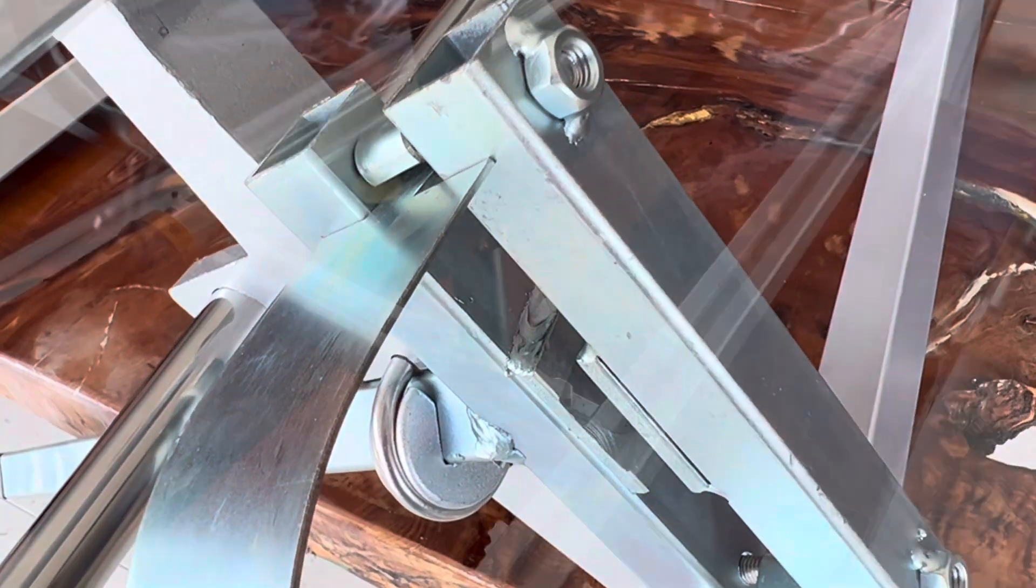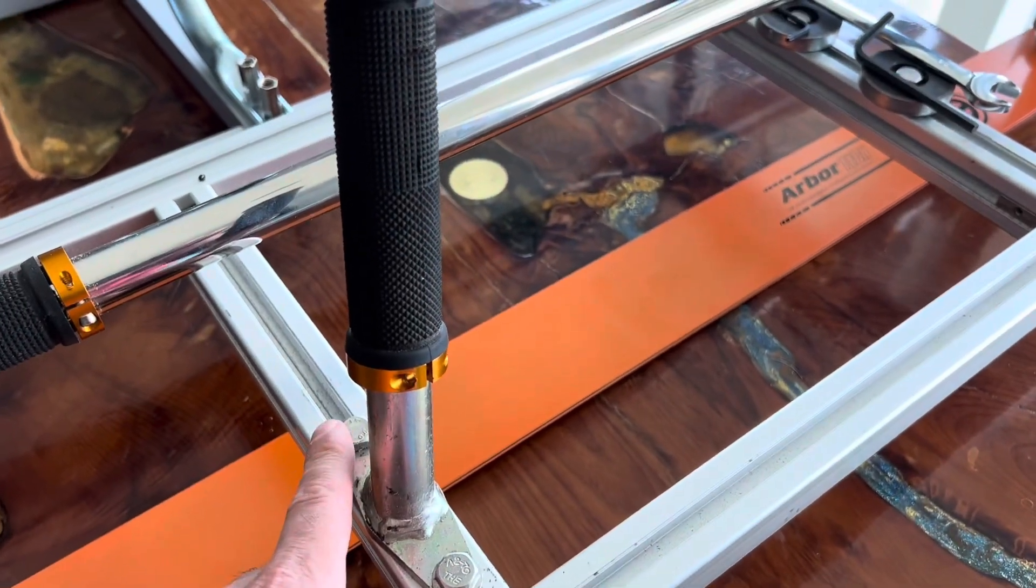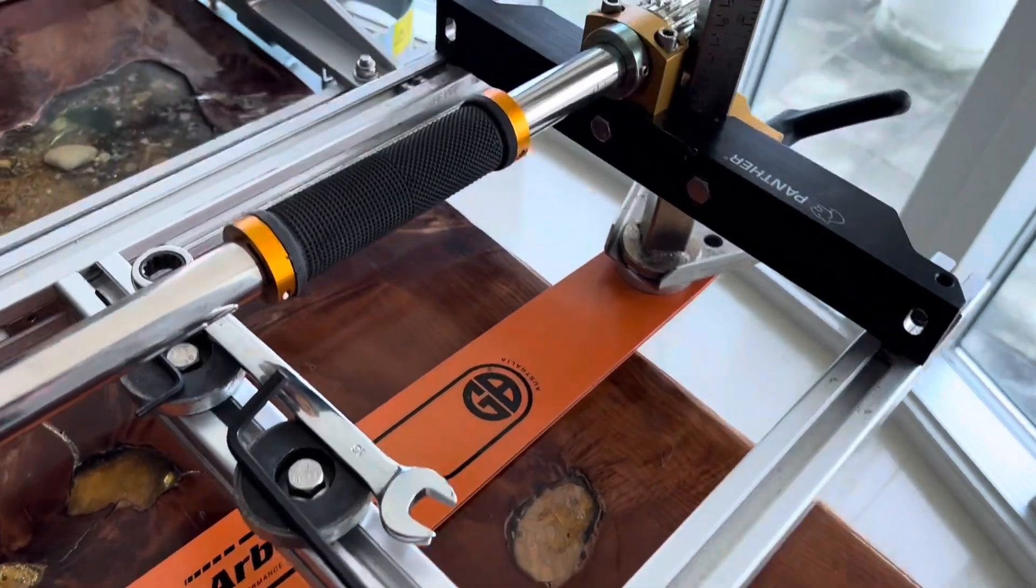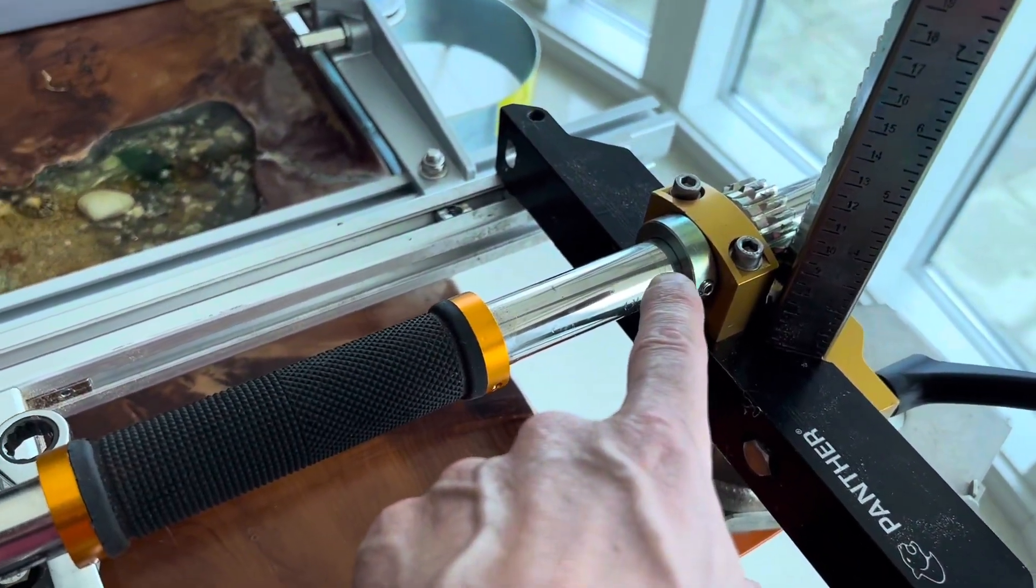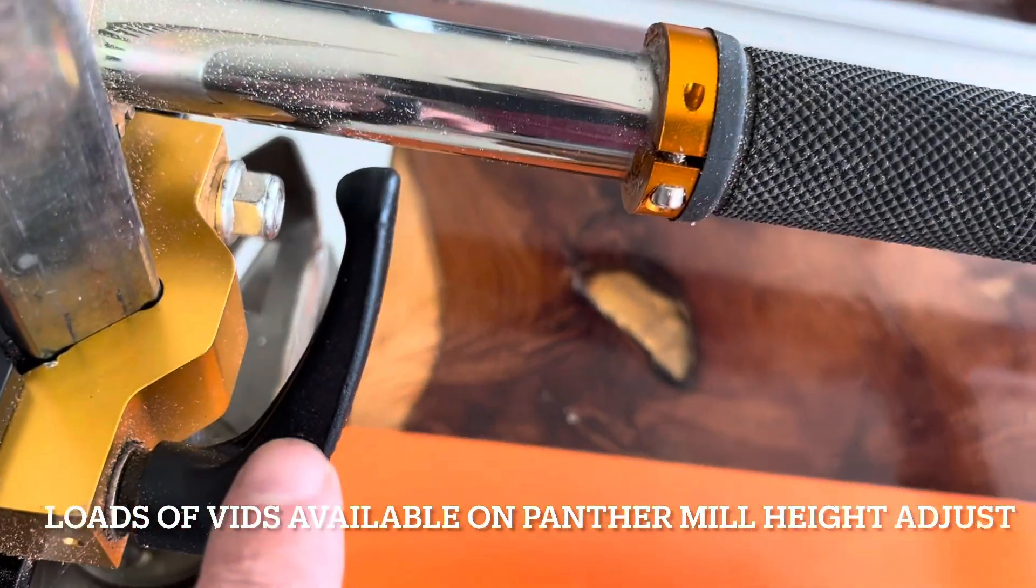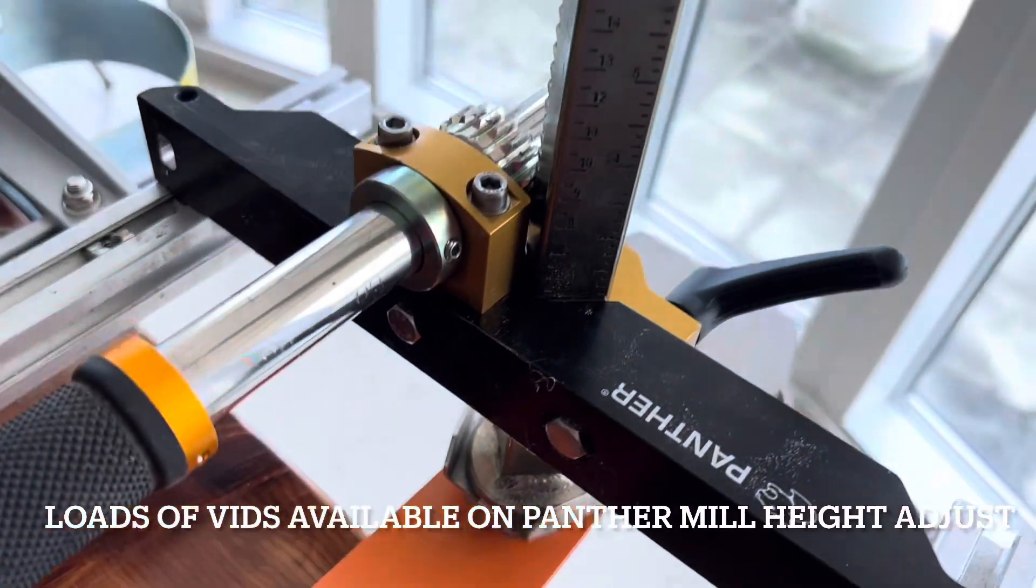A further difference, there's only one cross piece here but on the Panther mill you have two cross pieces and that helps keep it stable on the log. Probably the biggest difference is the fast height adjust. Undo the lever there, rotate this round handle and then you can adjust the height very quickly and easily toollessly.